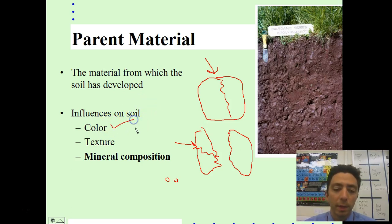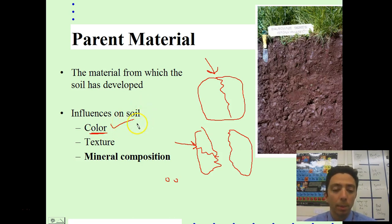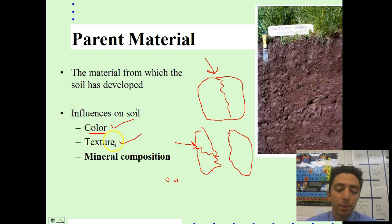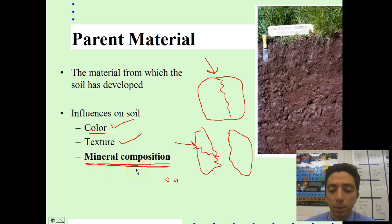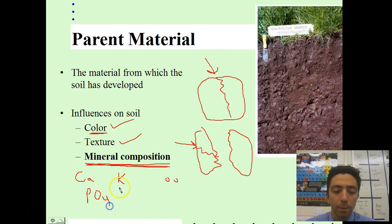Parent material influences the color of the soil — iron-rich parent material gives a reddish or red-brown color, while limestone, which is calcium carbonate, produces a lighter colored soil. It also influences the texture, which comes from the size of the particles and how much the parent material was weathered down. A really big factor is the mineral composition: calcium, potassium, and phosphates found in the parent material are typically found in the soil they help form.